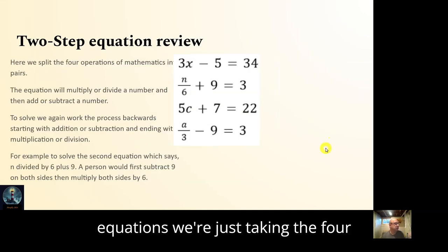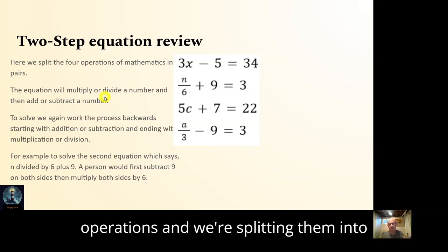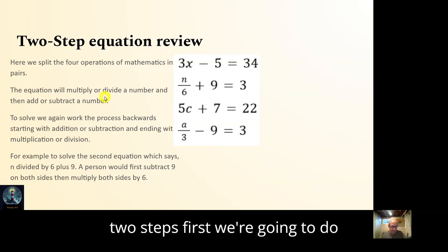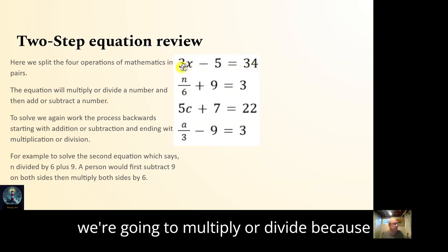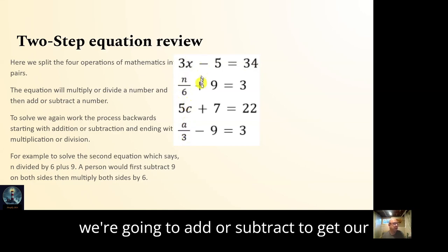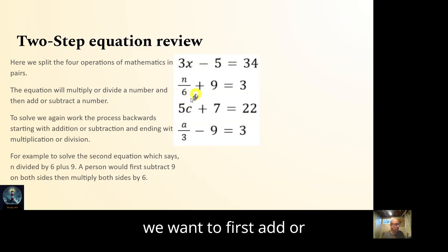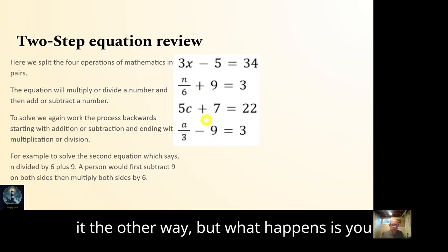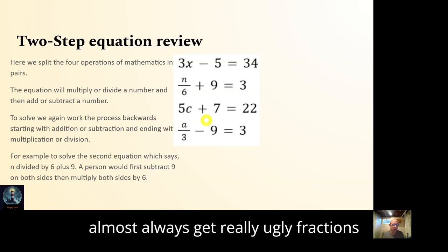Two-step equations. We're just taking the four operations and we're splitting them into two steps. First we're going to multiply or divide because that's the order of operations. Then we're going to add or subtract to get our answer. And so to work backwards, we want to first add or subtract and then multiply or divide. You could do it the other way, but what happens is you almost always get really ugly fractions, which you don't want to work with.